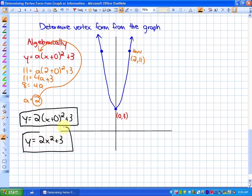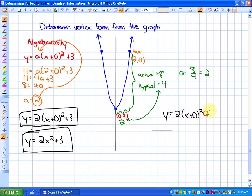You do not have to have the 0 there. If I wanted to do this graphically, my value of a, again, my actual vertical distance is 8. And my typical vertical distance would be 2 squared, which is 4. So my a value is 8 over 4, which is 2. So as you can see, our function would still be y is equal to 2x plus 0 squared plus 3.